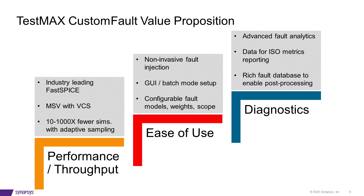Ease of use becomes a critical requirement as users begin to scale their fault campaigns to multiple large designs involving multiple test benches. TestMax CustomFault simplifies fault modeling by supporting a broad class of user-configurable fault models, including traditional short and open models for MOS, R, L, C, and BJT, as well as transient and parametric faults. TestMax CustomFault caters to the unique diagnostics and reporting requirements of automotive functional safety verification and manufacturing test coverage analysis use cases. Users can analyze the efficiency of primary and redundant safety mechanisms in mitigating failures in their safety-related hardware and generate diagnostic coverage metrics to verify industry standard reliability compliance.